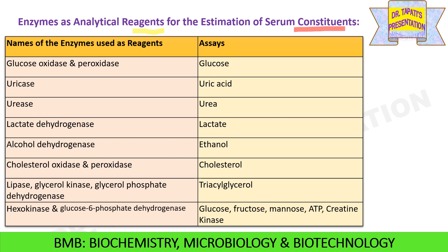Glucose oxidase and peroxidase enzyme activities are measured in order to estimate glucose content present in serum. Uricase and urease enzyme activities are measured in order to check uric acid content and urea content present in serum. Lactate dehydrogenase enzyme activity is estimated in order to measure lactate content present in blood. Alcohol dehydrogenase activity is measured to determine ethanol content.